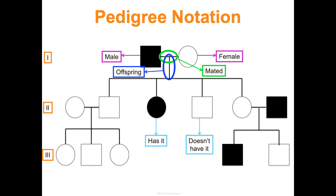Shaded means the individual has whatever trait or disease we're tracing; unshaded means they do not. Some notations use half-shading to indicate carriers, but many pedigrees don't include that, so we won't be using it here.